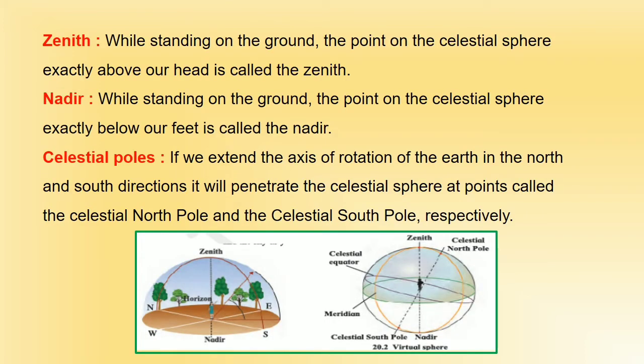Let's understand zenith, nadir, and celestial poles. First, zenith: while standing on the ground, the point on the celestial sphere exactly above our head is called the zenith.